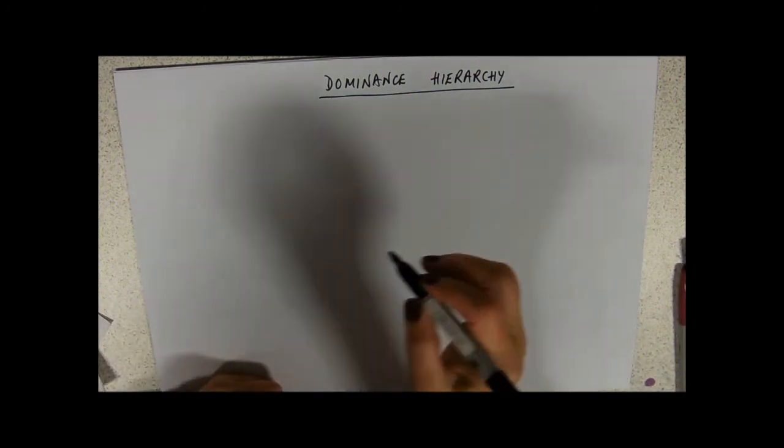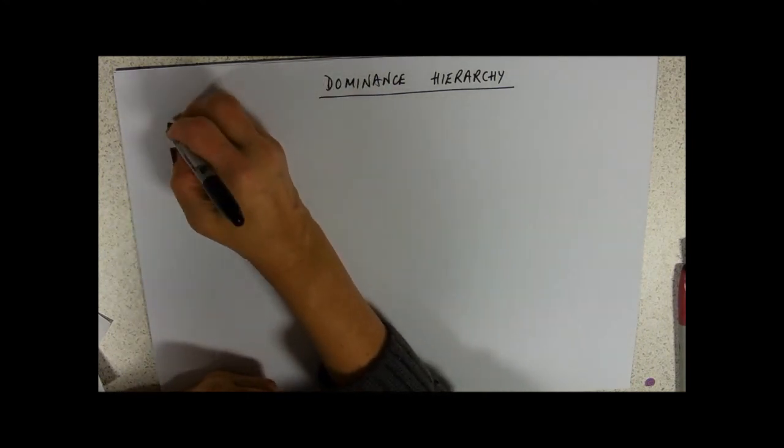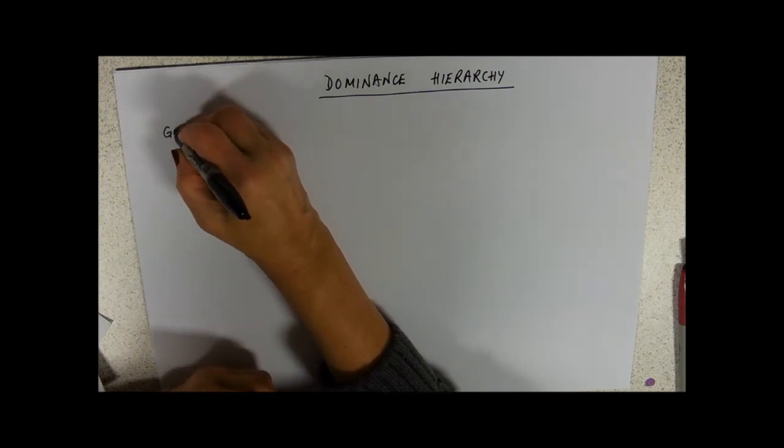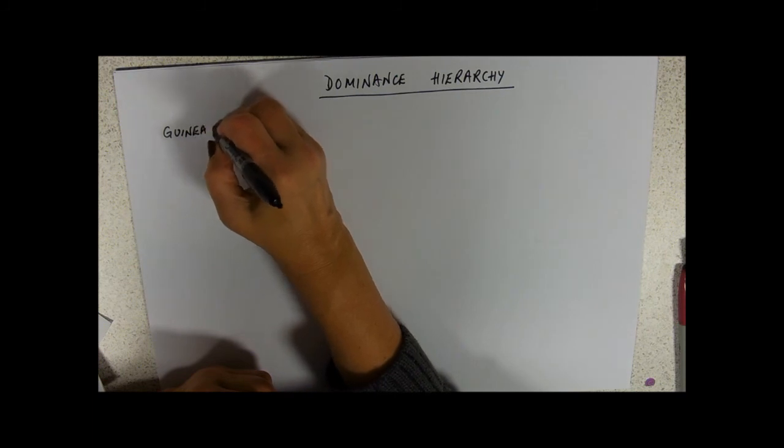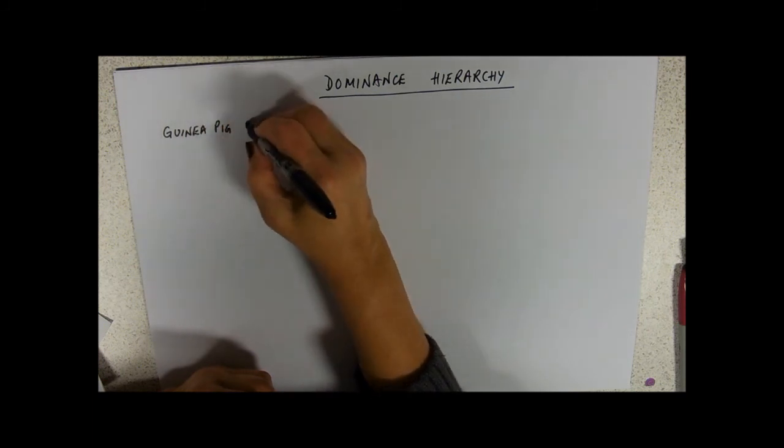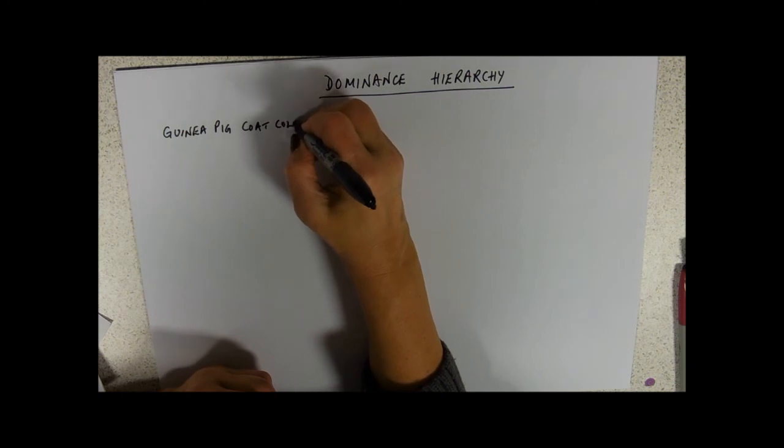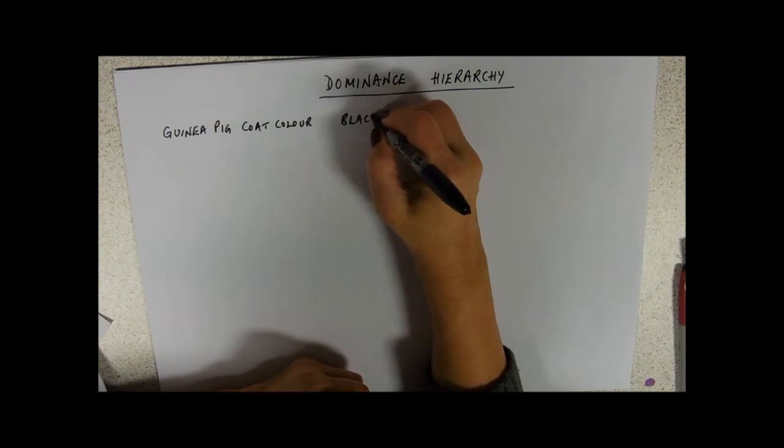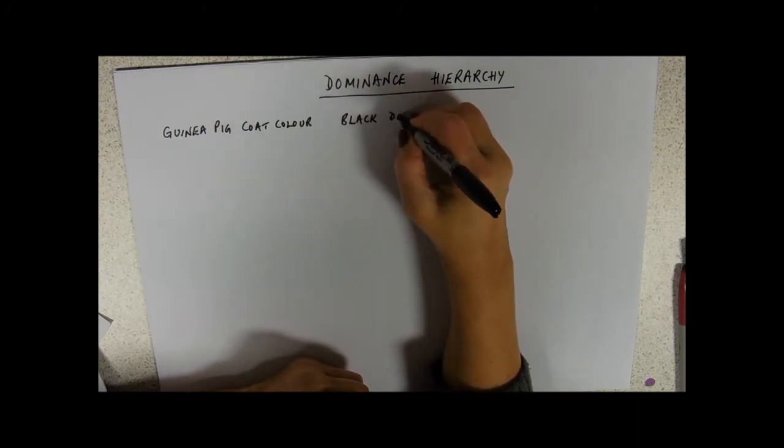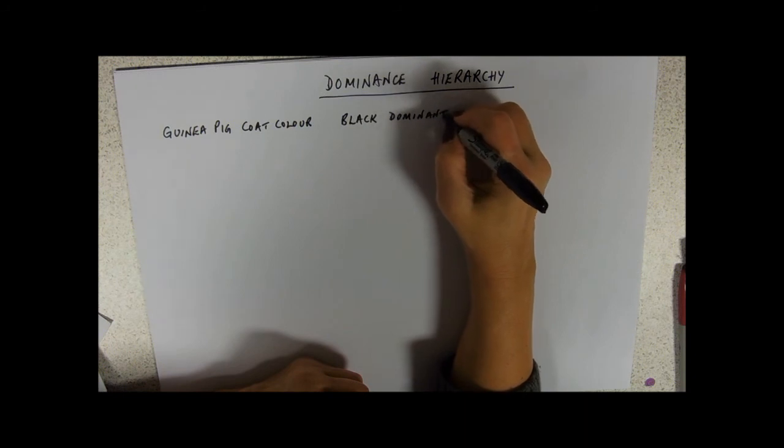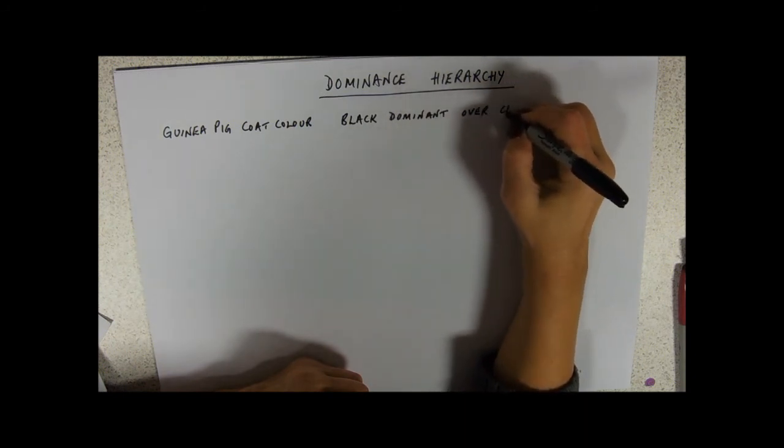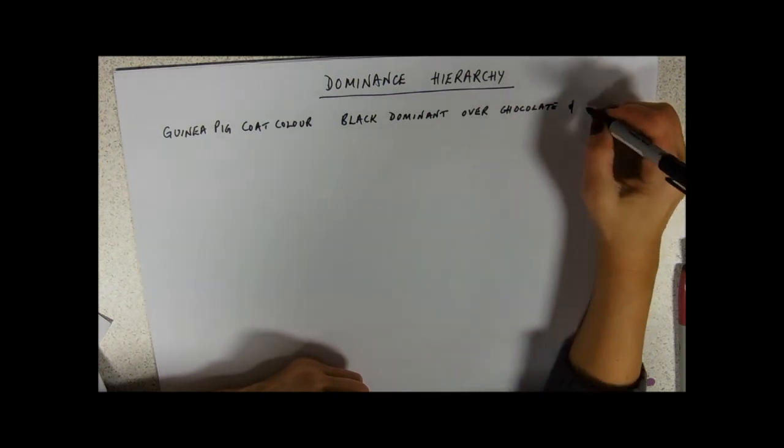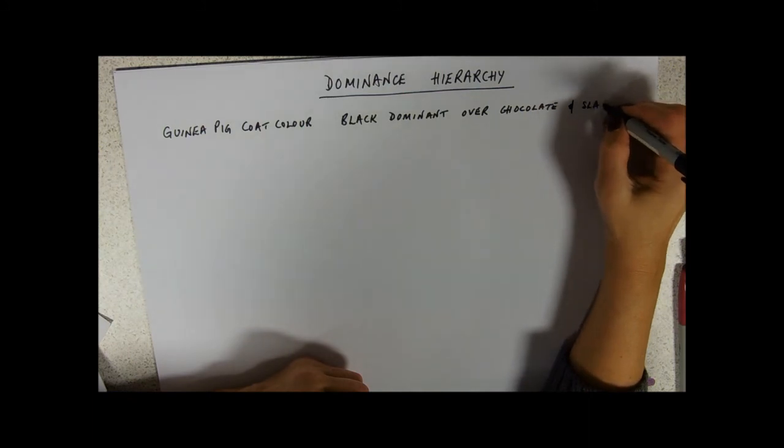So I'm kind of imagining, and I did ask Dr. Schofield about this, but he just gave me way too much information. So I'm going to imagine that guinea pig coat color goes like this: that black is dominant over chocolate and slate color. Apparently these are all real guinea pig colors, but it's not dominance hierarchy.